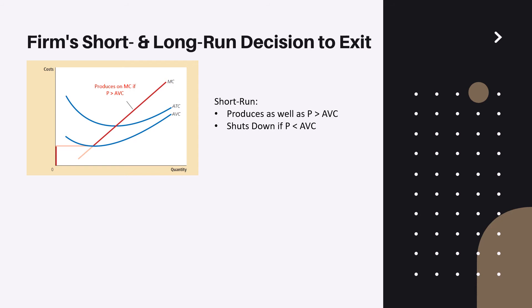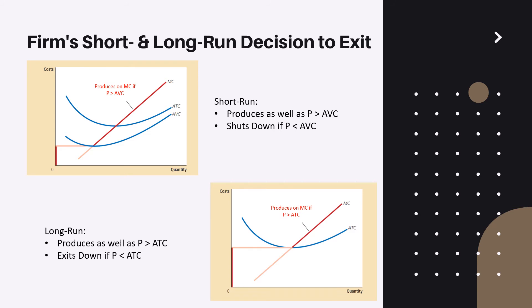In the long run, we discuss the decision to exit — to completely terminate the company's activities. The situation is different: the long-run decision to exit becomes efficient when the price falls below ATC, average total cost. The difference is that here we also take fixed costs into account, because ATC is composed of average variable costs plus average fixed costs — it is the sum of both.